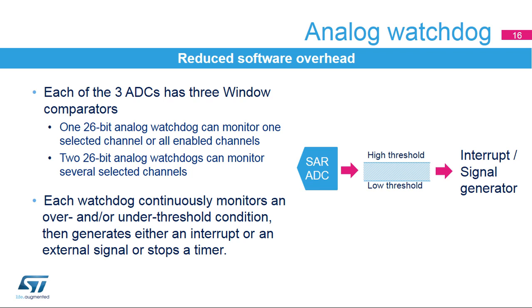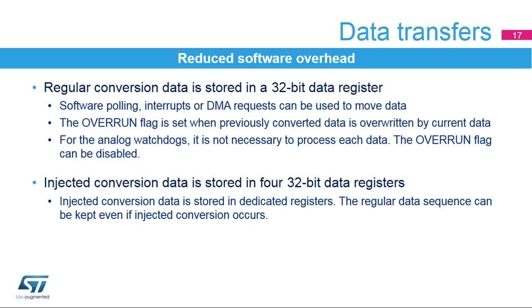Each ADC has an integrated analog watchdog with high and low threshold settings. The ADC conversion value is compared to this threshold window. If the result exceeds the threshold, an interrupt or external signal can be generated, or a timer can be immediately stopped without CPU intervention. The ADC conversion result is stored in a 32-bit data register. The system can use CPU polling, interrupts, or DMA to make use of the converted data. An overrun flag can be generated if data is not read before the next converted data is ready.